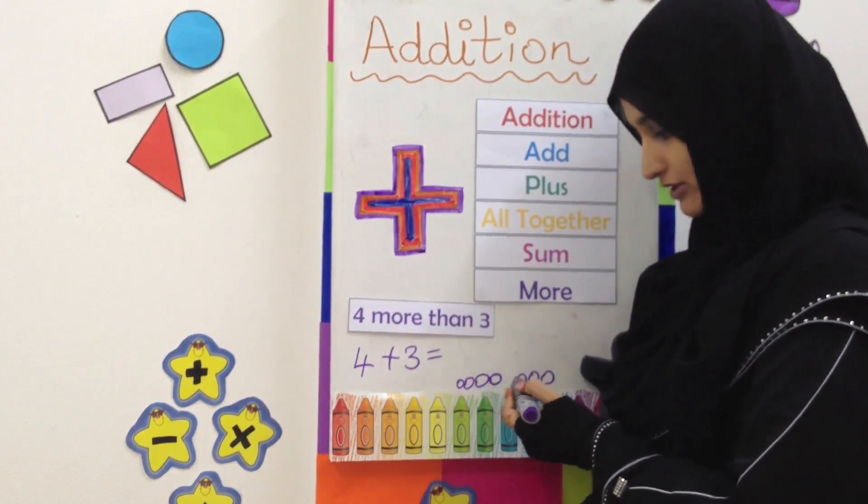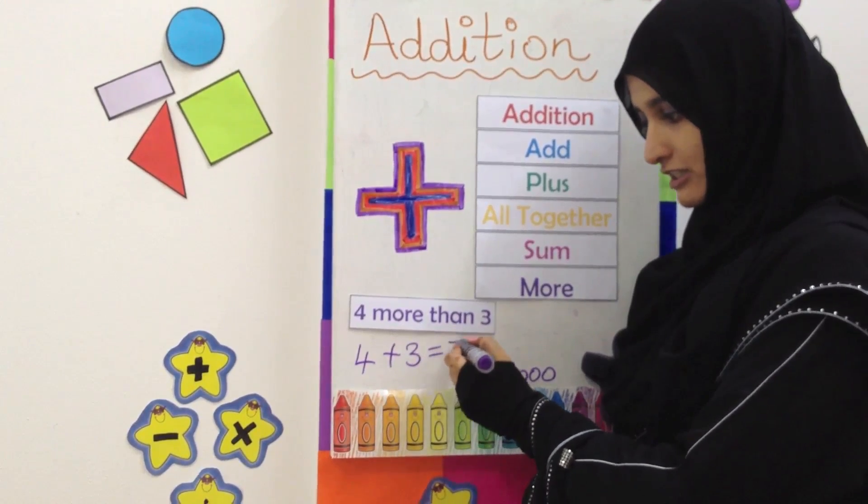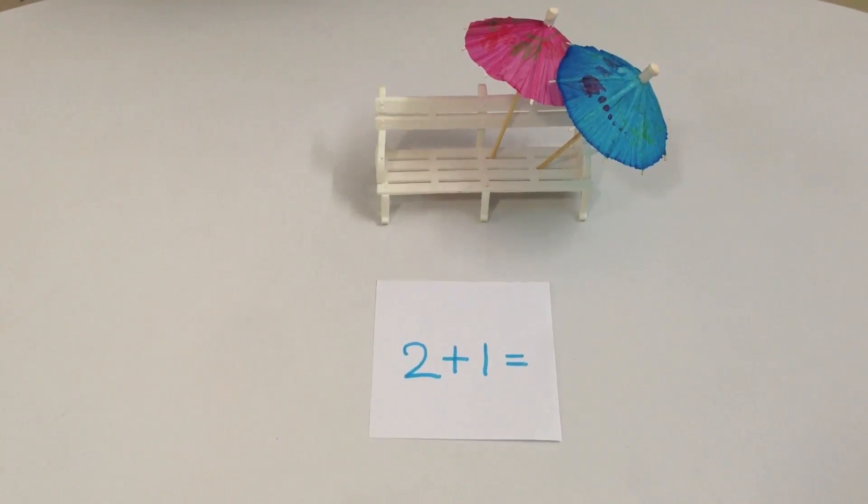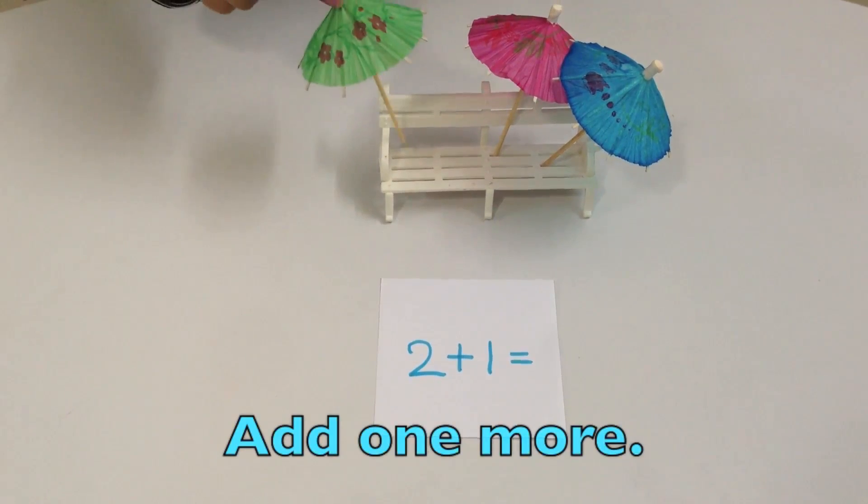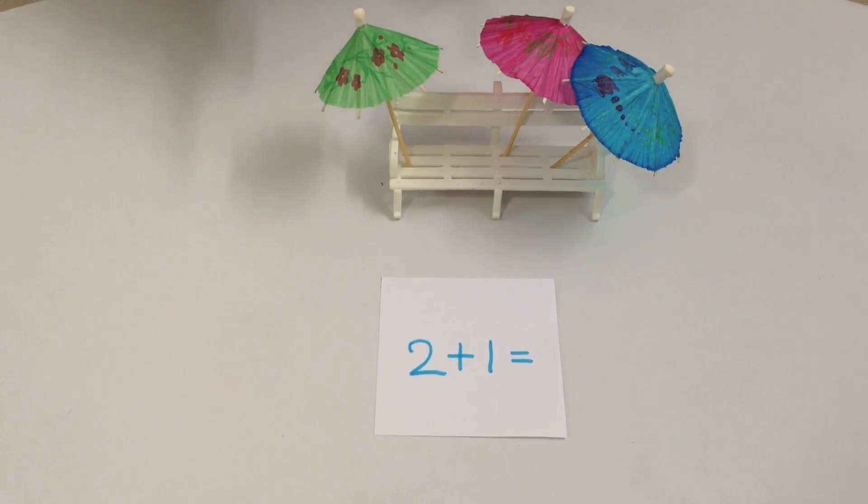One, two, three, four, five, six, seven. Four plus three equals seven. Two plus one. You have to now add one more, so we have one, two, three.